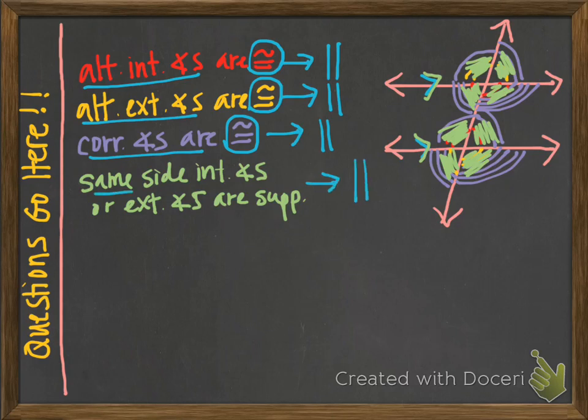In this case, with this type of angle pair — either interior or exterior, same side — we must show that they are supplementary, that they add to 180. That's how you would set up your equation using the algebra. If you can show that, you can say those two lines are parallel. And conversely, if you can show that they are not supplementary, then you can prove that they are not parallel.